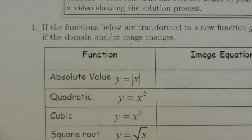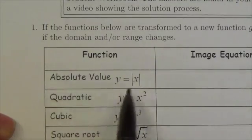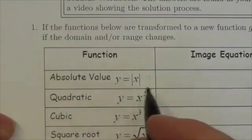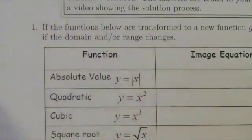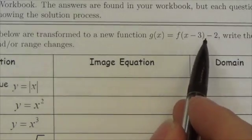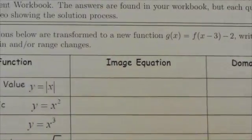Hi everyone, so in this particular question here, what we're being asked to do is to take a look at a given function, the absolute value function, and we're going to put it through this transformation, x minus 3 minus 2, and just take a look at what it looks like.